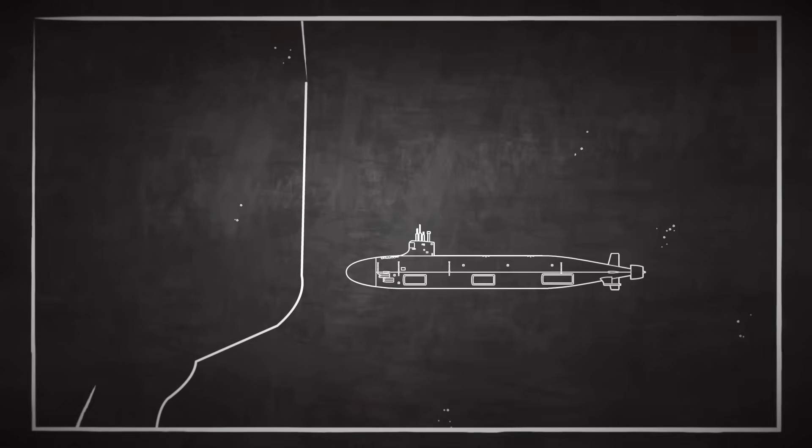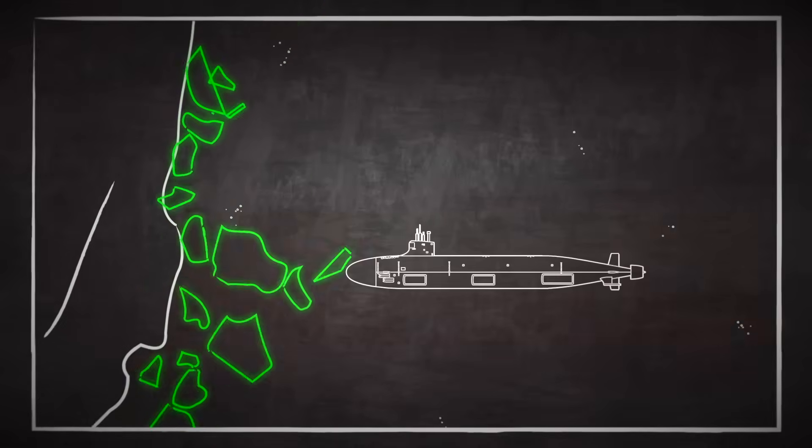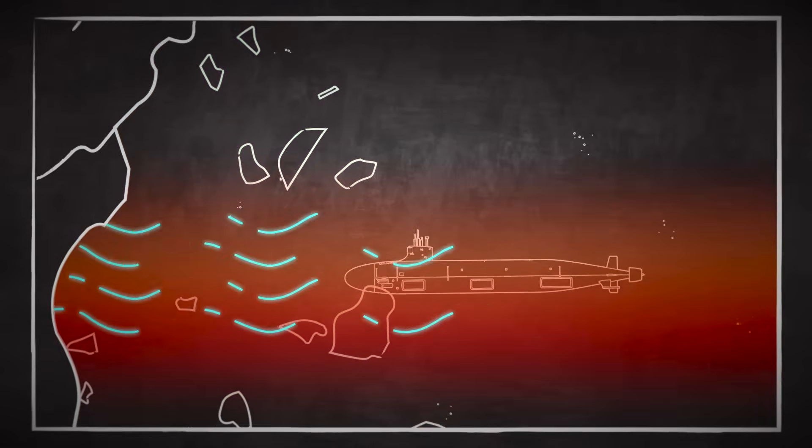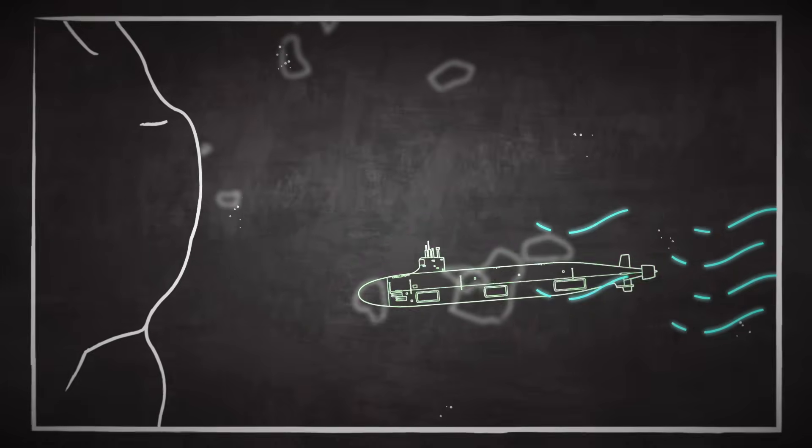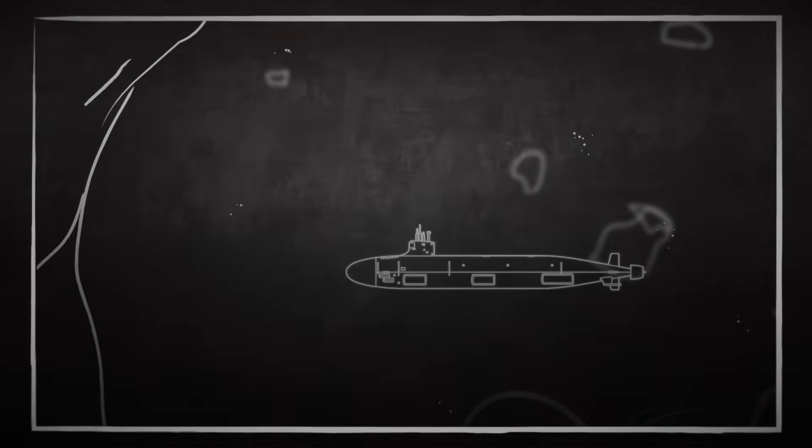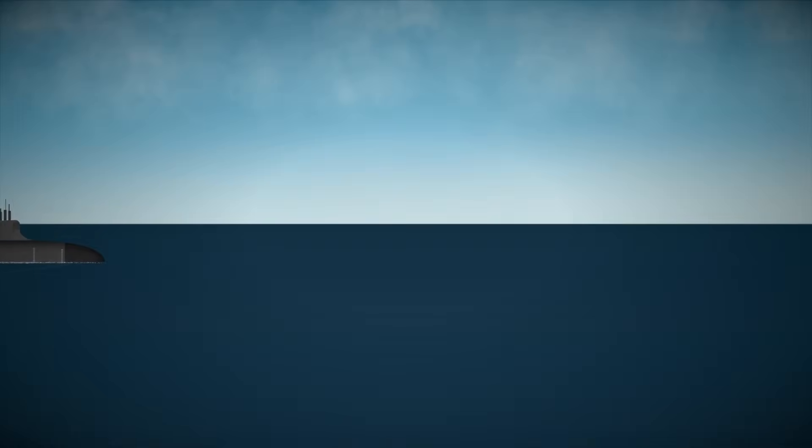Even nature becomes a threat. Underwater landslides, temperature changes, and sudden shifts in ocean currents can give away a sub's position, or worse, force it into unsafe depths. For all the science and engineering that goes into making submarines invisible, the real question is, why?